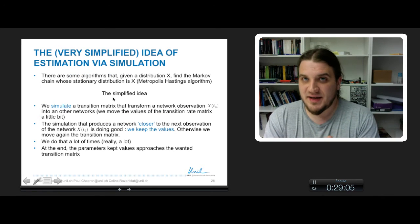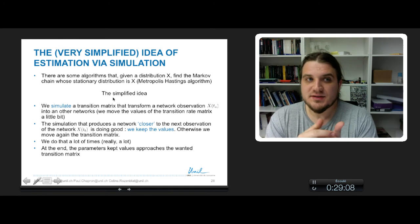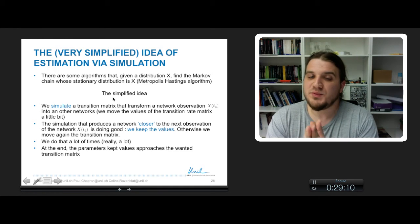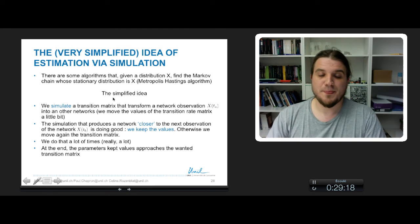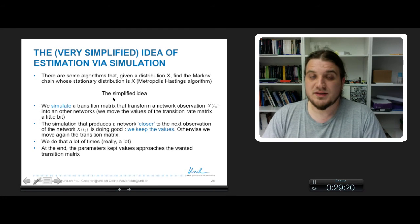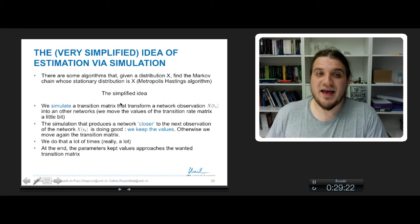The second idea is that there are some algorithms that, given a distribution X, find the Markov chain whose stationary distribution, so the ultimate state of the Markov chain, is X.